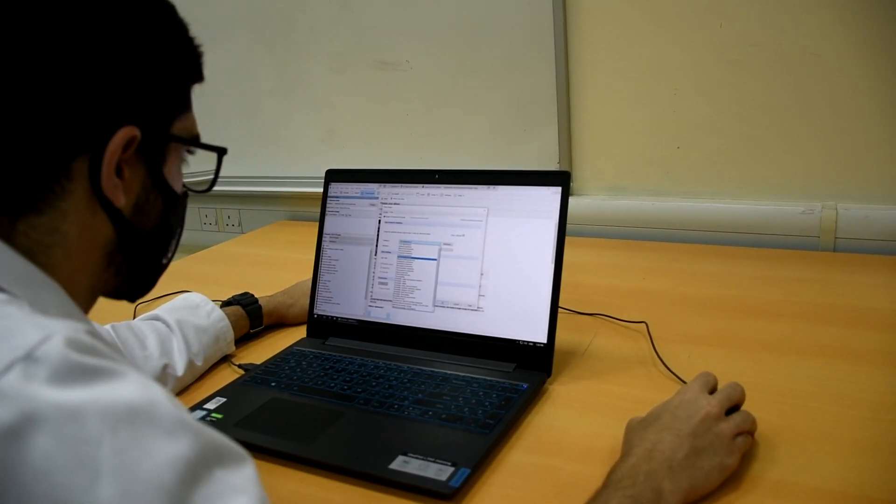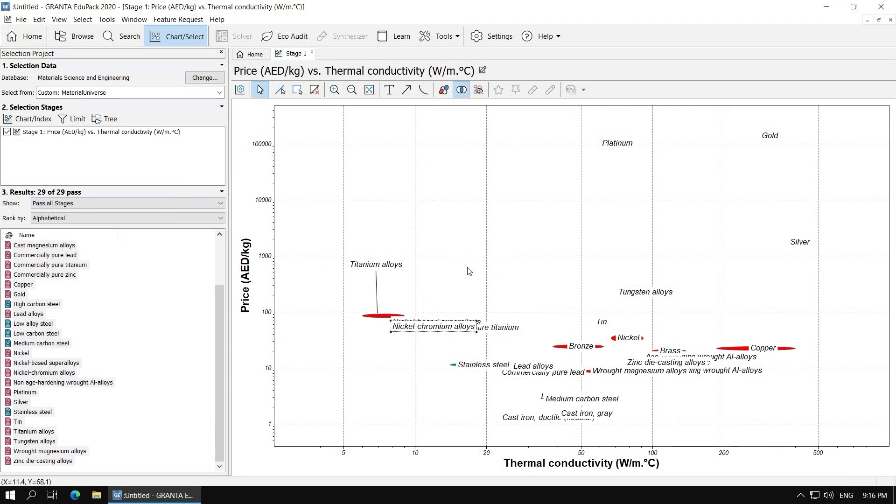The software compares and investigates several ferrous and non-ferrous alloys according to the two parameters. It was decided that aluminum and copper alloys are the best material for this study.